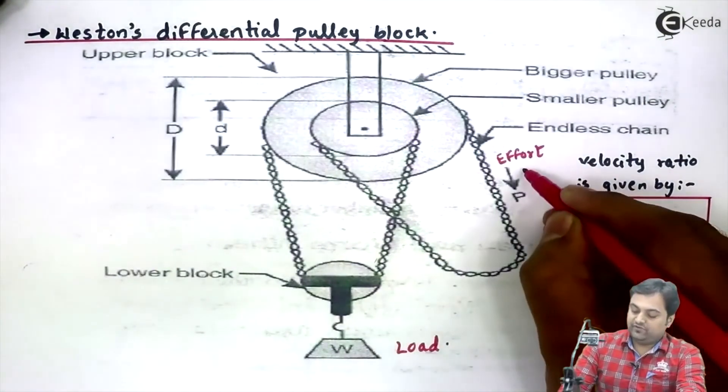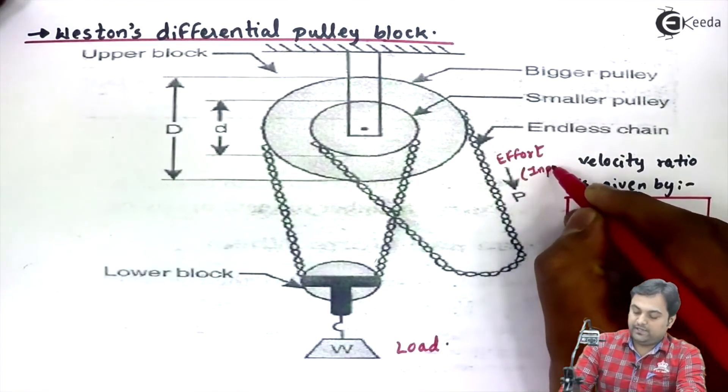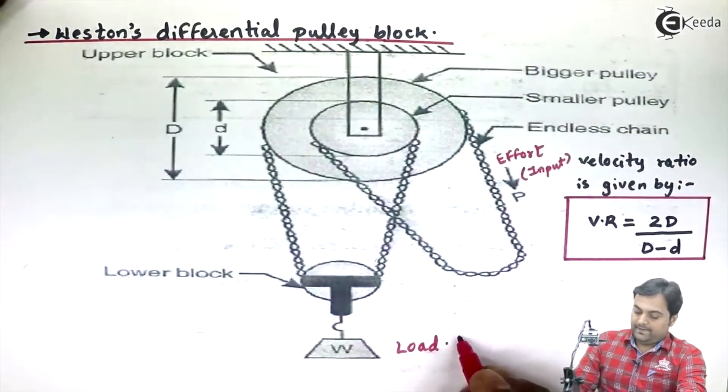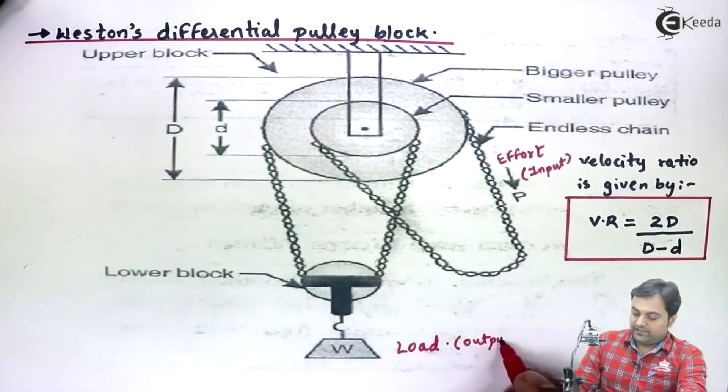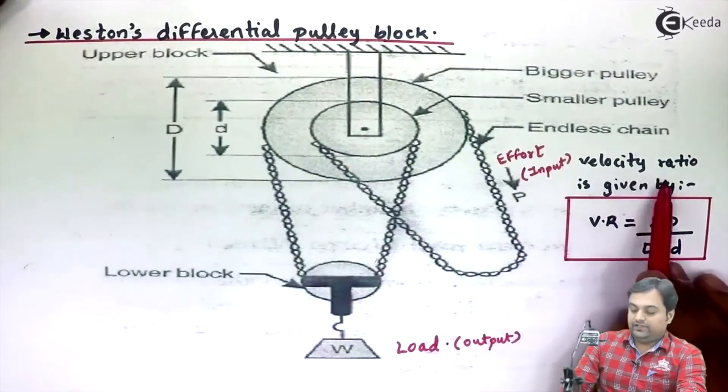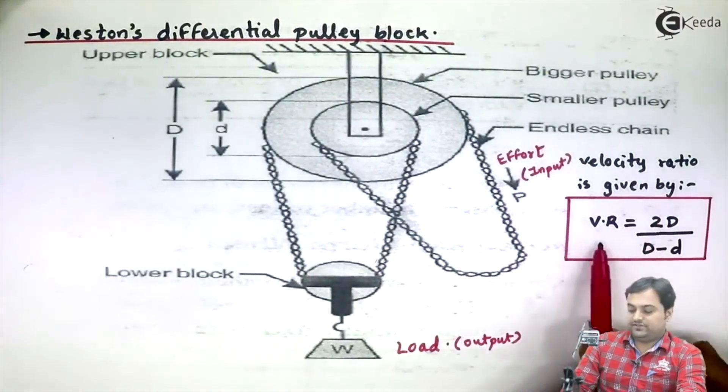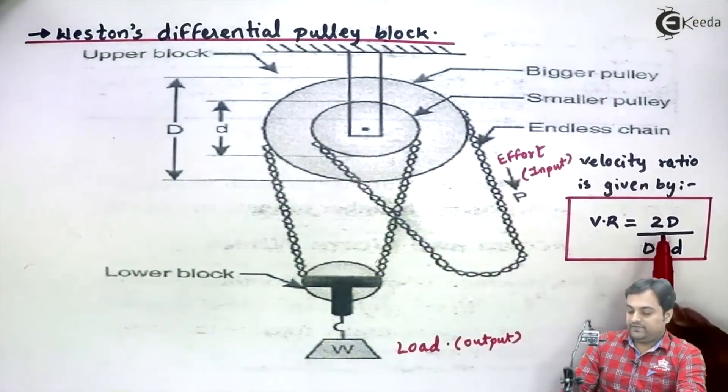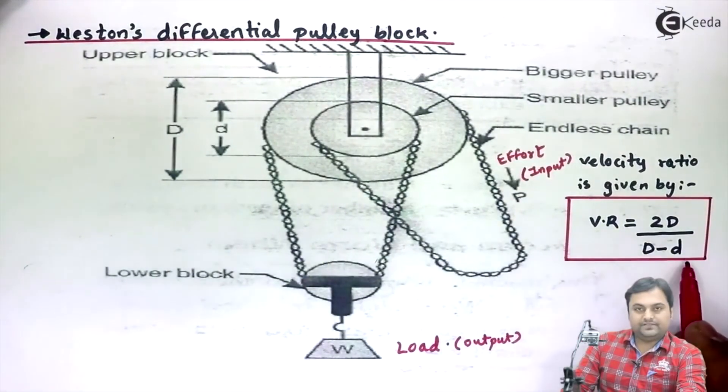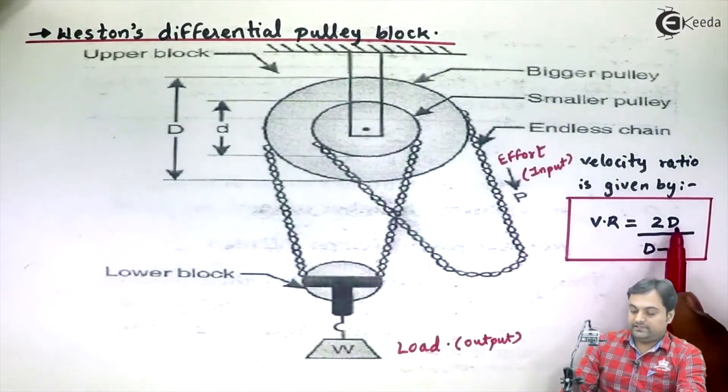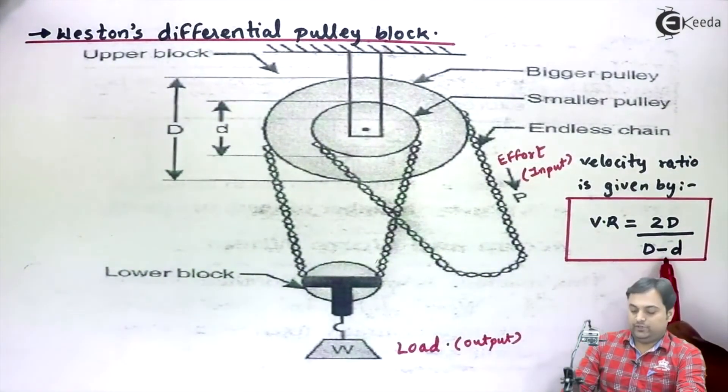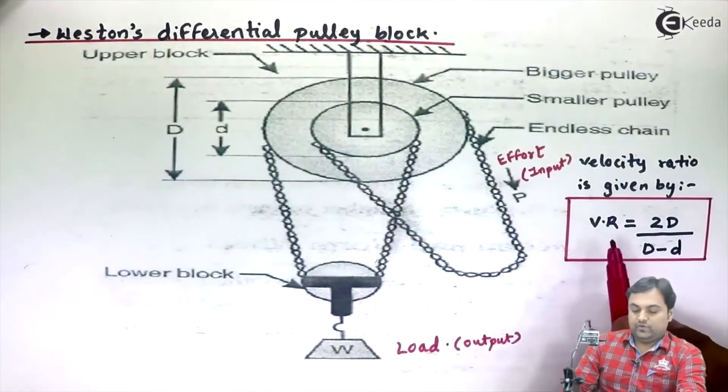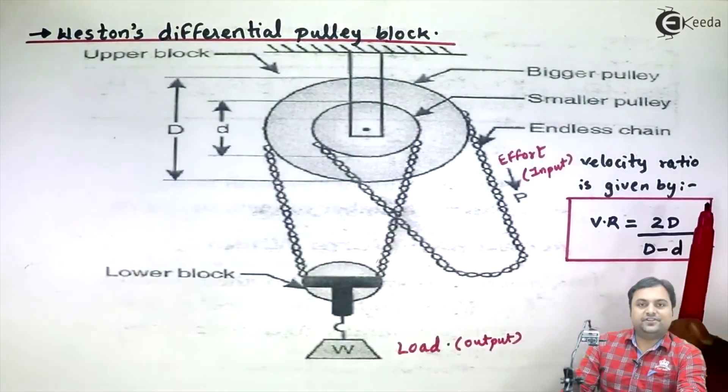This effort is the input which we are applying, and the load is the output we are getting. The velocity ratio formula for Weston's differential pulley block is given by 2D/(D-d), where capital D is the diameter of the bigger pulley and small d is the diameter of the smaller pulley. This completes Weston's differential pulley block.